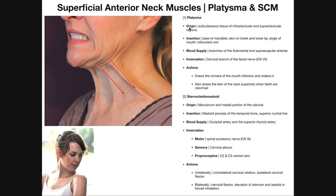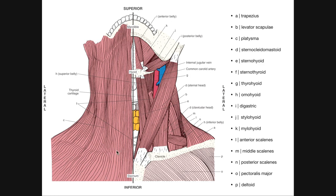The platysma's origin is on the subcutaneous tissue of the infraclavicular and supraclavicular regions — meaning the fascia in the area above and below the clavicle. It also fuses with the pectoralis major, particularly the clavicular head, as it descends downward.